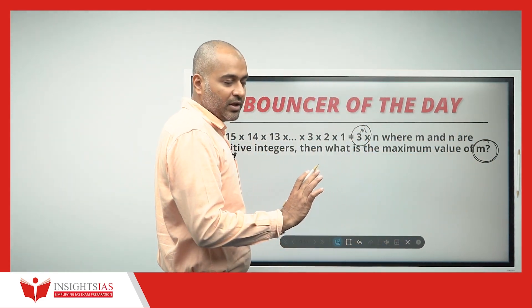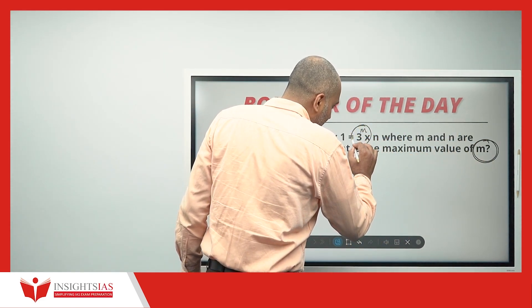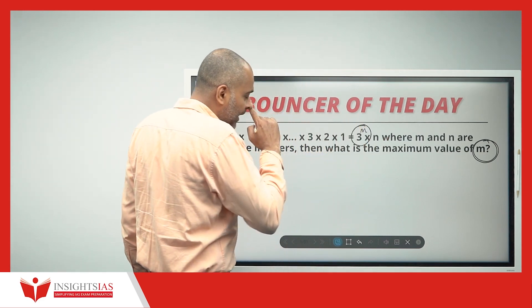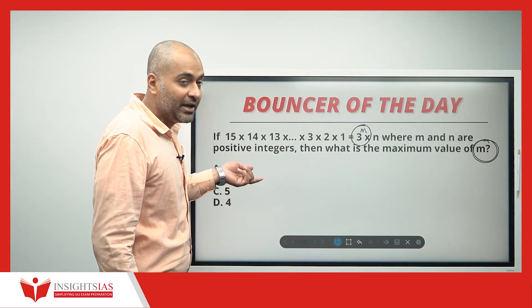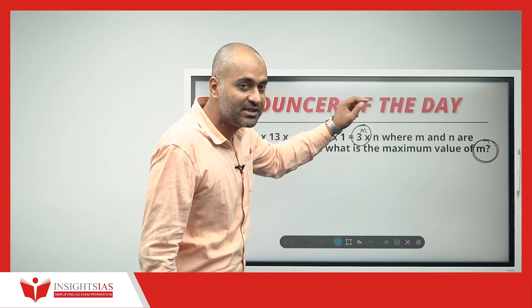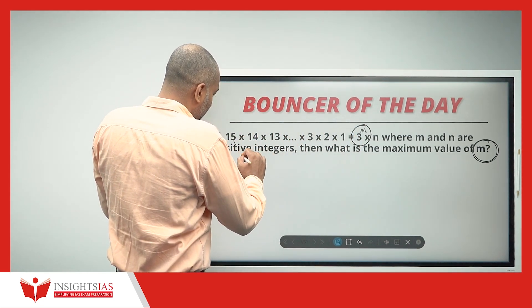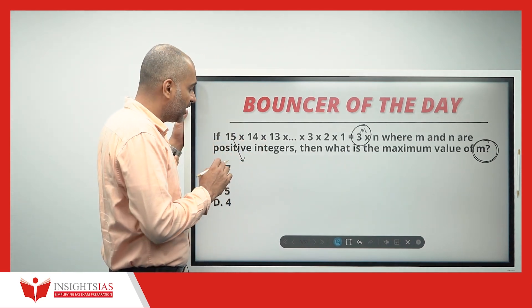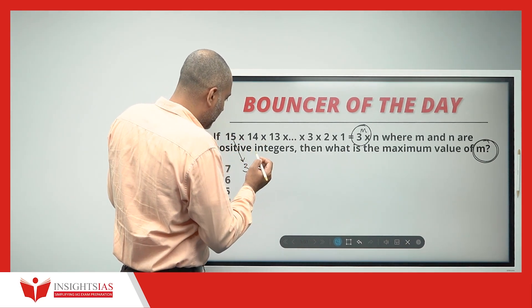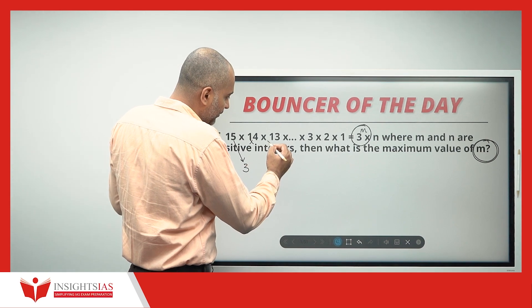You have to focus only on the m. m is the power of 3. Yesterday also in the few questions I have explained that how to take the maximum power of any prime factor. Now, in this 15, do we have 3? Yes, how many 3s? One 3. 14, we don't have. 13, we don't have.